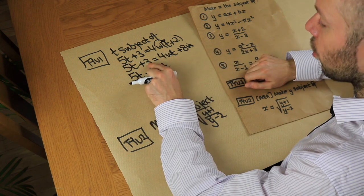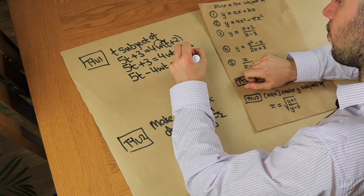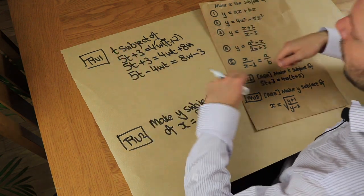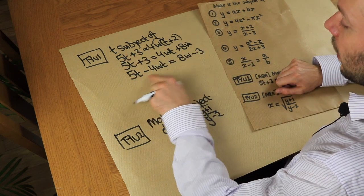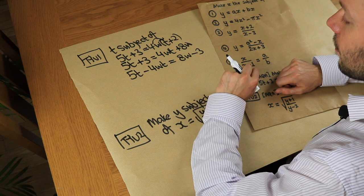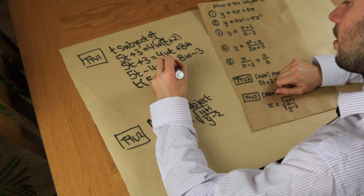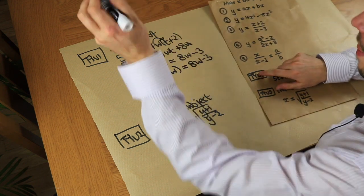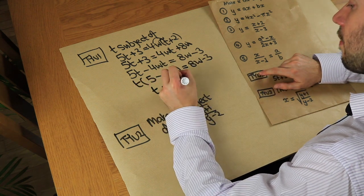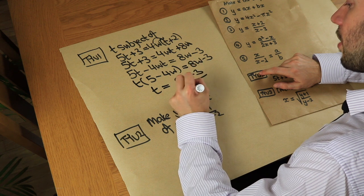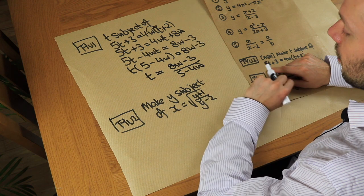We subtract 3 at the same time to move it to the right-hand side — you may want to do this in two steps, but it's nice to do it in one. So all t terms are now isolated on the left: 5t minus 4wt, with no t terms on the right. Factorize out t: t(5 minus 4w) equals 8w minus 3. Then divide both sides by (5 minus 4w), and we are done — t is isolated on one side of the equation.